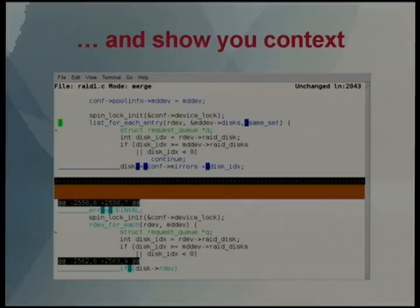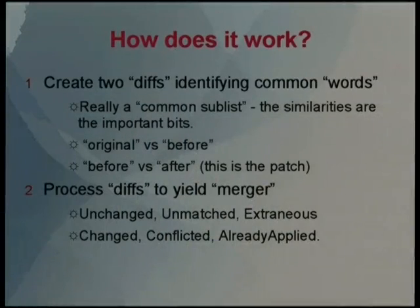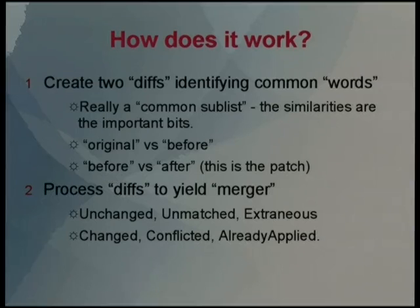When Wiggle can't do the right thing, often there's nothing that can be done — the bit of code that's been changed just doesn't exist anymore, or it has to be completely rewritten anyway. So how does it work? It does a couple of things. First it creates two diffs. It takes a patch and breaks it into two bits: the before bit — all context and minus lines — and the after bit — all context and plus lines. Then it does a diff between the original and the before bit, and re-diffs the before bit and the after bit. It lines them all up and produces six different sorts of mappings, as we'll see in a picture.